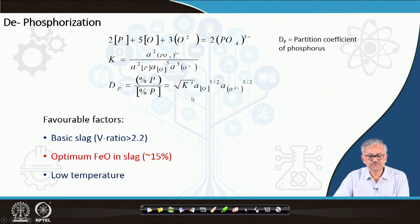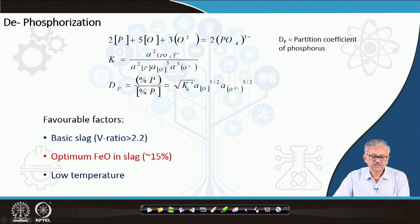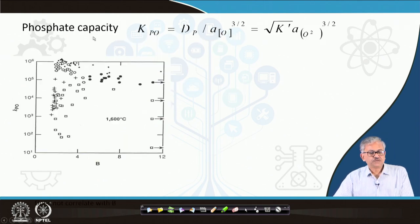The favorable conditions for dephosphorization — that is, for increasing the partition ratio — are: a basic slag with high basicity, higher oxygen activity, an optimum FeO content in the slag as the oxidation potential, and low temperature, because K is inversely proportional to temperature. At lower temperature, K is higher, so dP is higher.